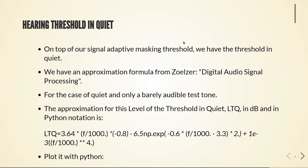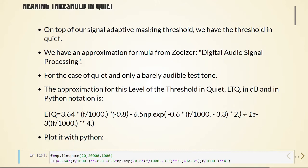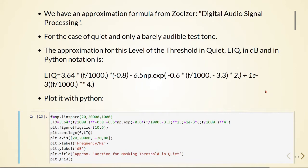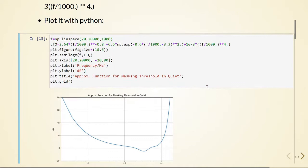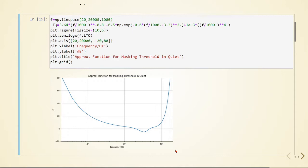Another important thing to have in mind is the hearing threshold in quiet. On top of our signal-adaptive masking threshold, we also have the threshold in quiet. An approximation formula of this masking threshold can be found in the Digital Audio Signal Processing book by Zölzer, and it is for the case of quiet with only a barely audible test tone. The approximation for this threshold in quiet, LTQ in dB, is given by this equation in Python, and we can plot this.